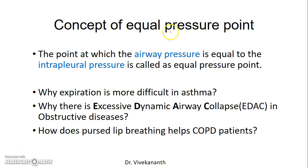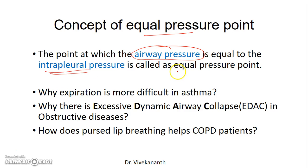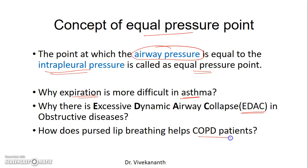This video is about the concept of equal pressure point in respiratory physiology. It is defined as the point at which the airway pressure is equal to the intrapleural pressure. Understanding this concept will help explain many observations, like why expiration is more difficult in asthma, why there is excessive dynamic airway collapse in obstructive disorders, and how pursed lip breathing helps COPD patients.